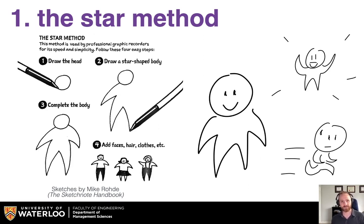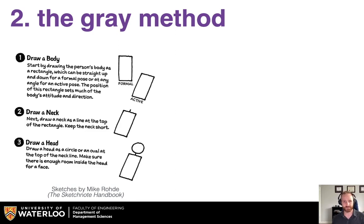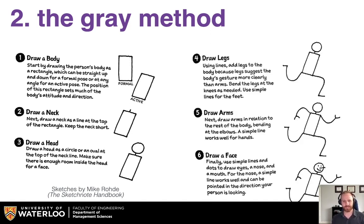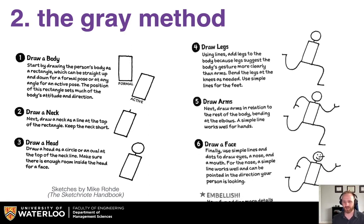Another way you might do this is the gray method. This is a way of doing stick figures that has a couple of extra insights in it. You draw a body using a little square — you can draw it straight for formal or tilted to make it an active person. You draw a neck and a circle for the head, and then you go in and fill in the limbs in these really simple methods. It's a stick figure, but you can do a lot with it.